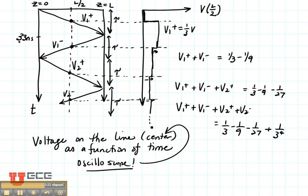The value that this eventually goes to when time equals infinity is called V infinity. And that is VG times ZL over ZL plus RG.